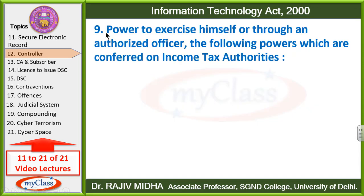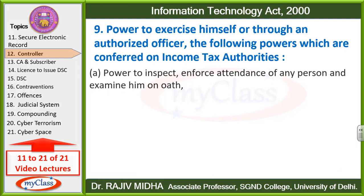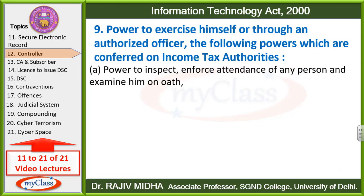9th point: Power to exercise himself or through an authorized officer the following powers which are conferred on income tax authorities. Kuch powers aisi hain jo controller khud exercise karega ya apne authorized officer ke through exercise karega. Jo power income tax authorities ko di gayi hai, unko bhi controller khud exercise kar sakta hai ya apne authorized officer ke through exercise kar sakta hai.